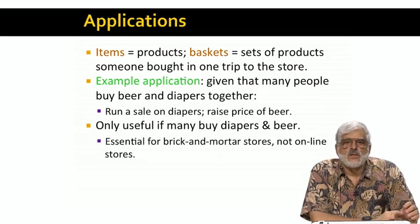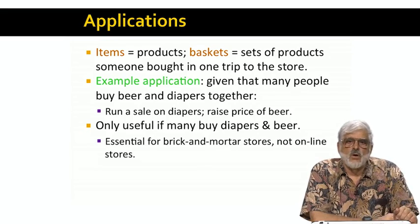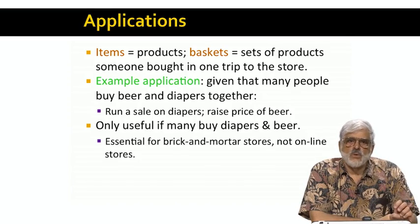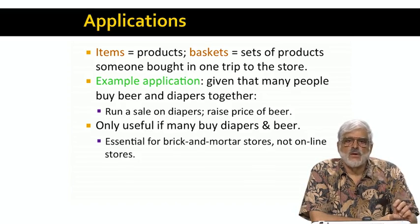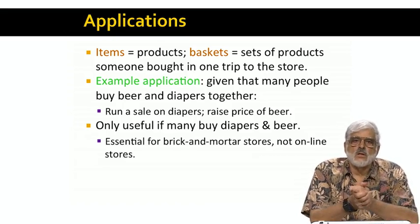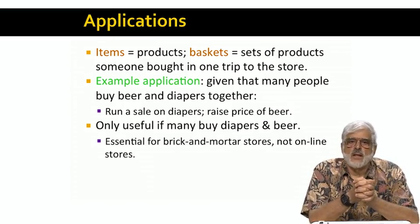I just want to point out that these techniques are appropriate mainly for brick and mortar stores. A brick and mortar store needs to know that lots of people buy diapers and beer, or else they're wasting time and money optimizing the sale of something that is rarely bought anyway. That viewpoint matches well with the idea that we're looking for high frequency rather than correlation between rarely purchased sets of items. Online stores, on the other hand, do not need to rely on high frequency, since they can tailor their store differently for each customer. Thus, entirely different forms of analysis are needed for online stores.